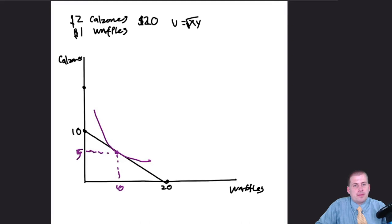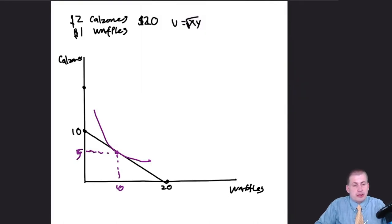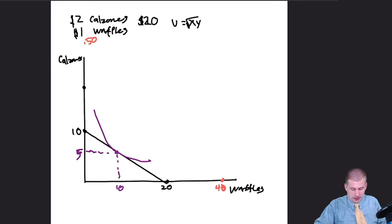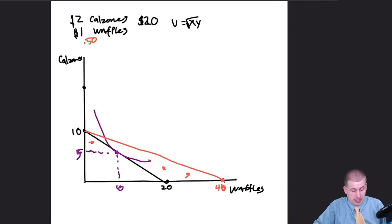In our hypothetical situation, there's suddenly a flash sale on waffles — waffles are no longer $1, they're only $0.50. That changes our budget. Instead of being able to buy 20 waffles, we can now buy 40 waffles if we spend all our money on waffles. This gives us a new budget line. Drawing the new budget line from 10 to 40, we can see it swings outward. Now we have a bigger possibility of buying stuff because waffles are cheaper.